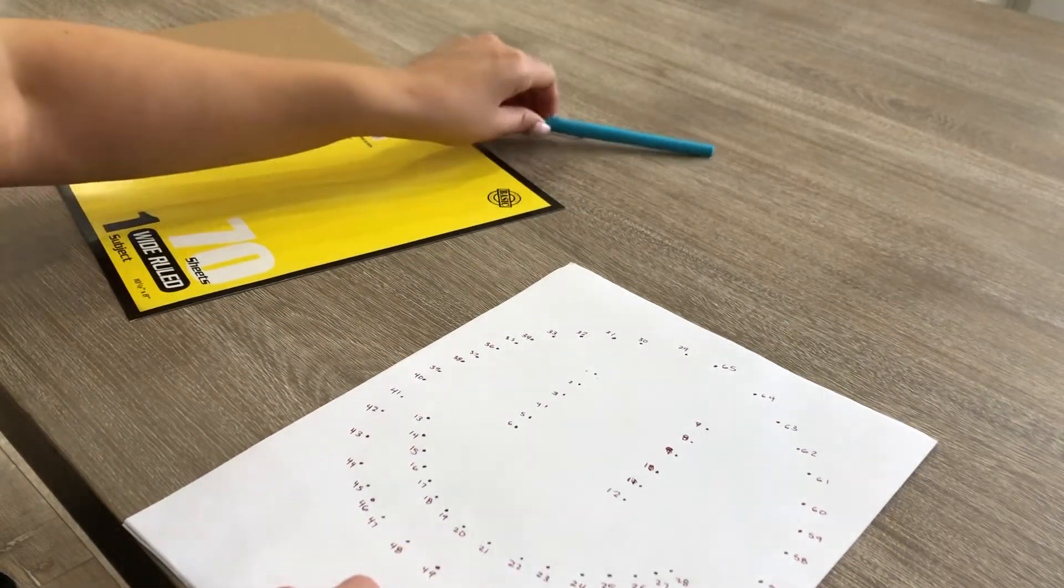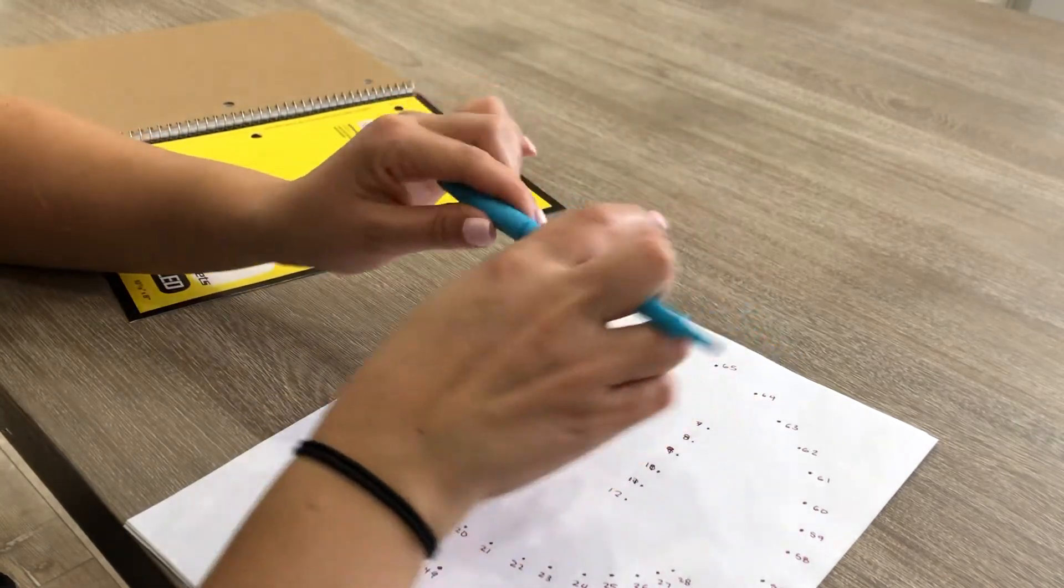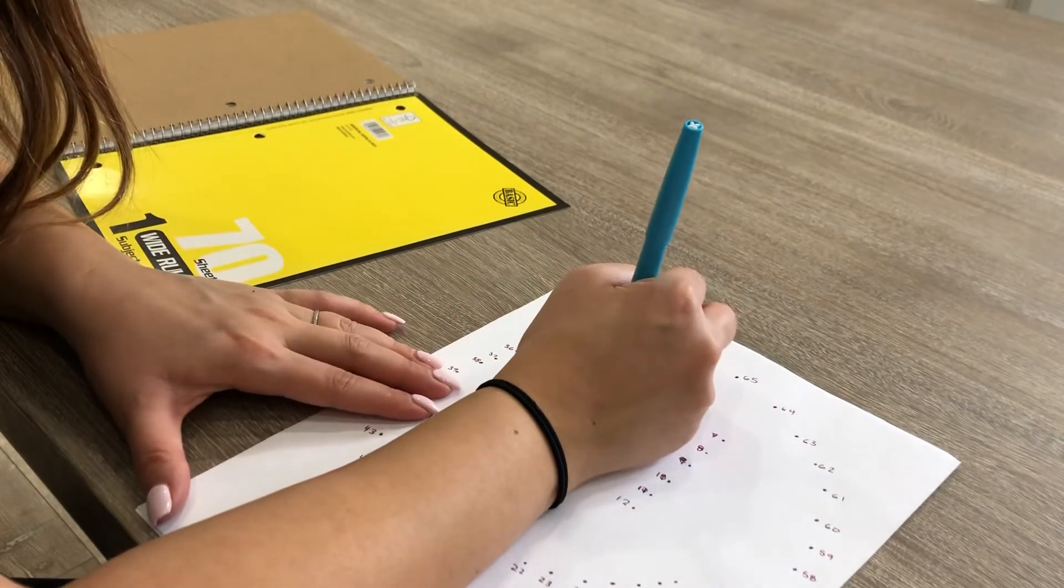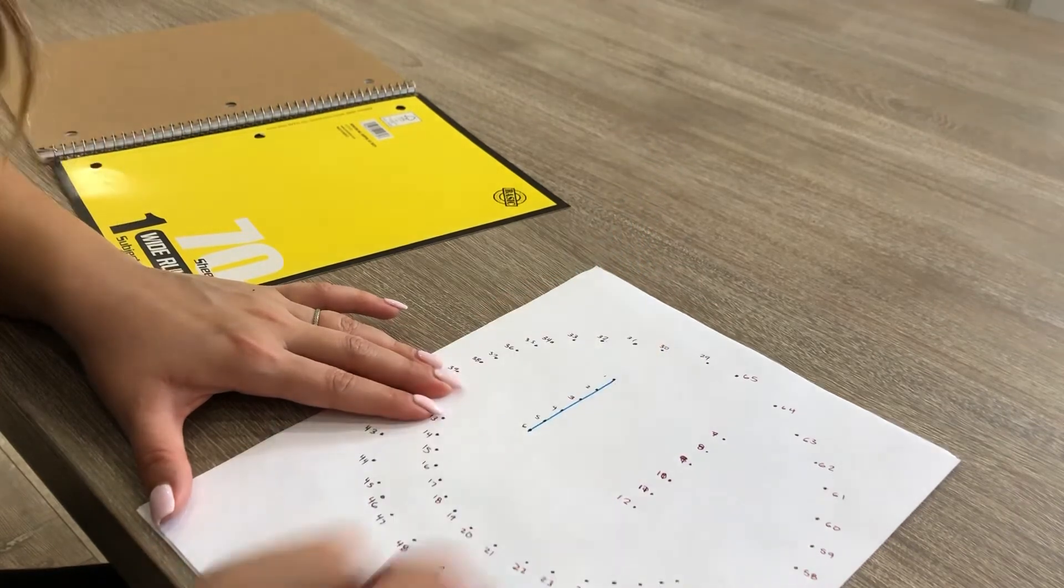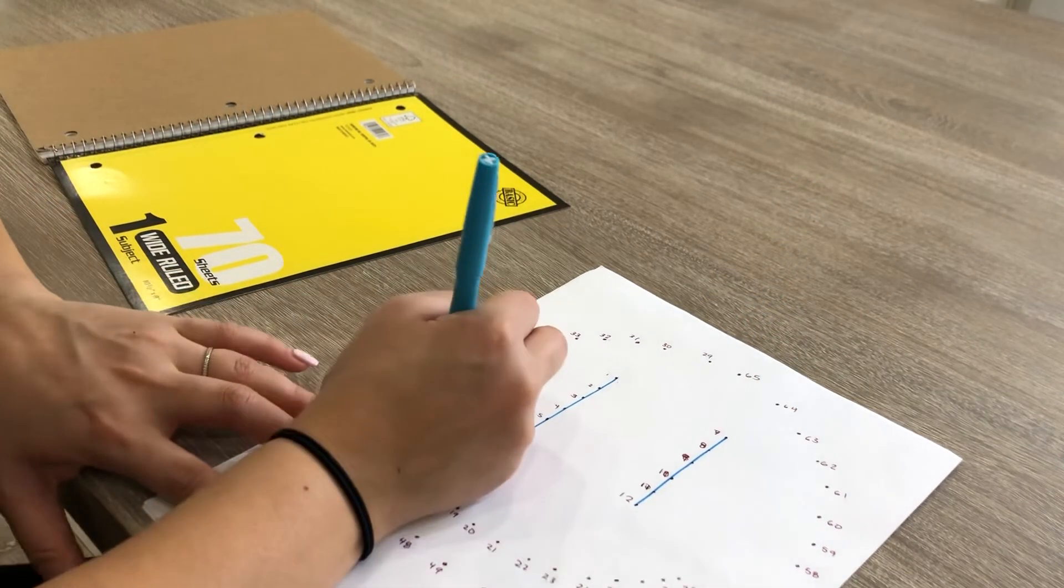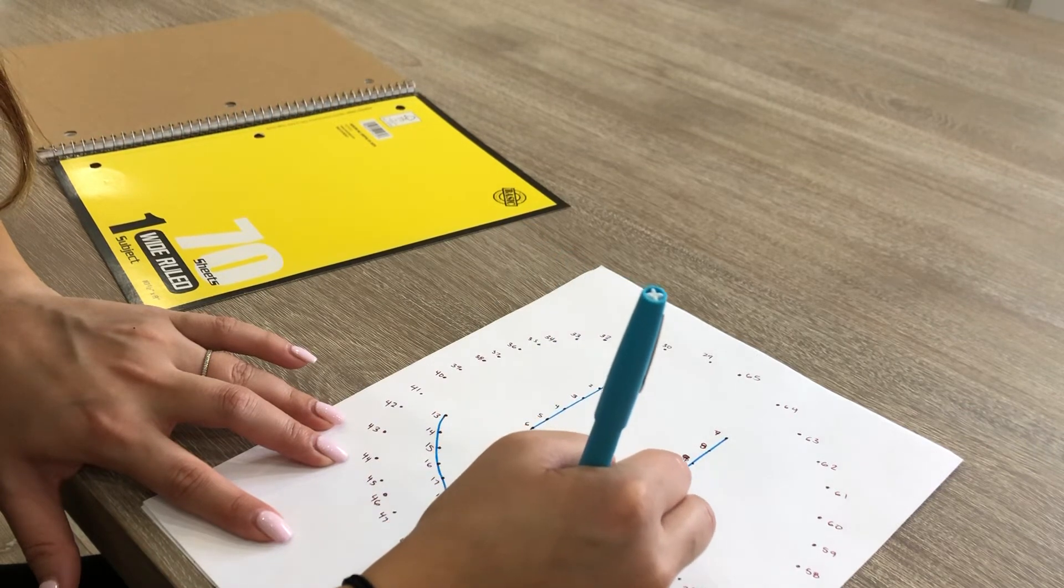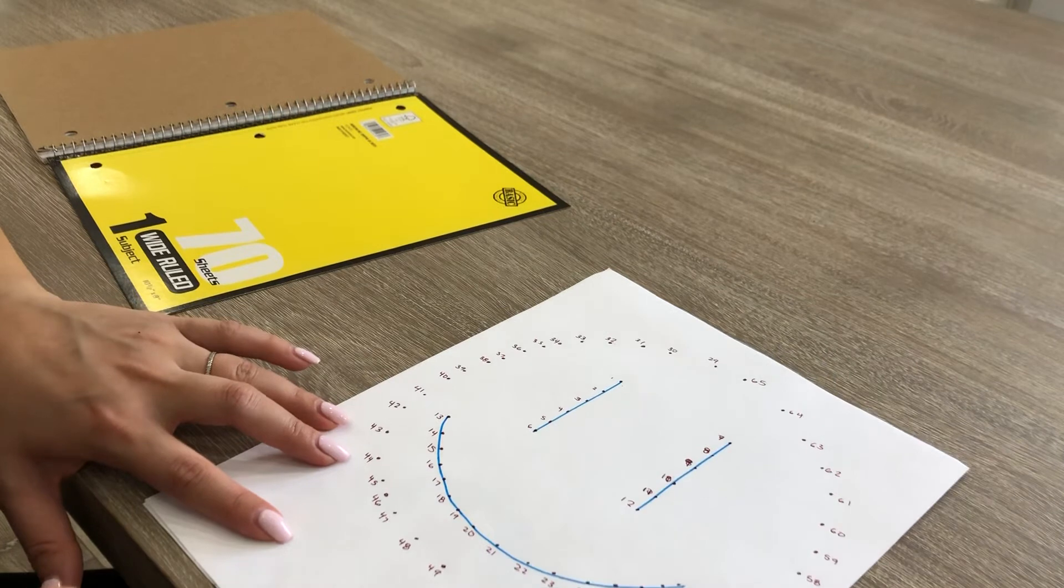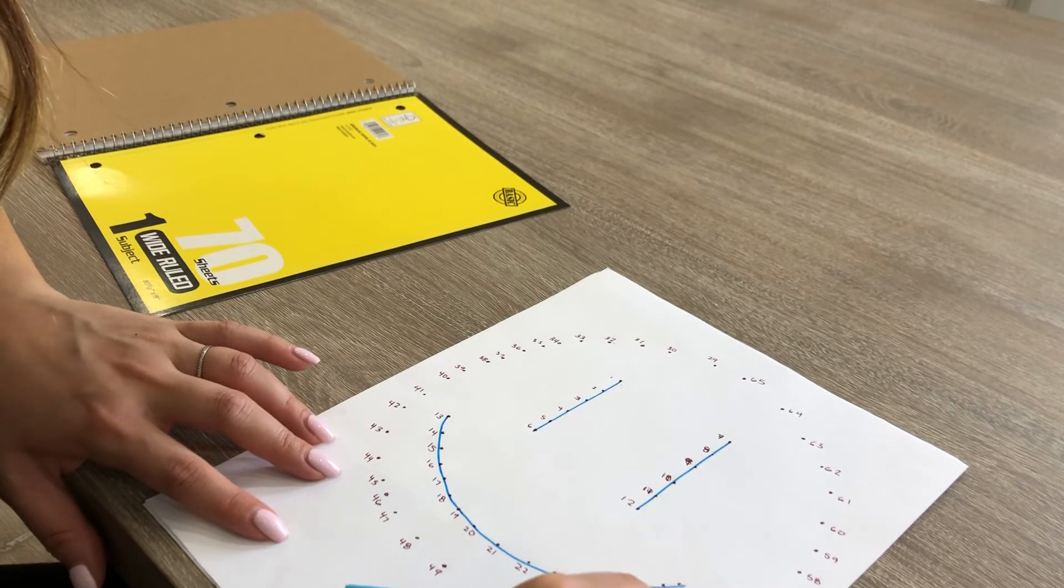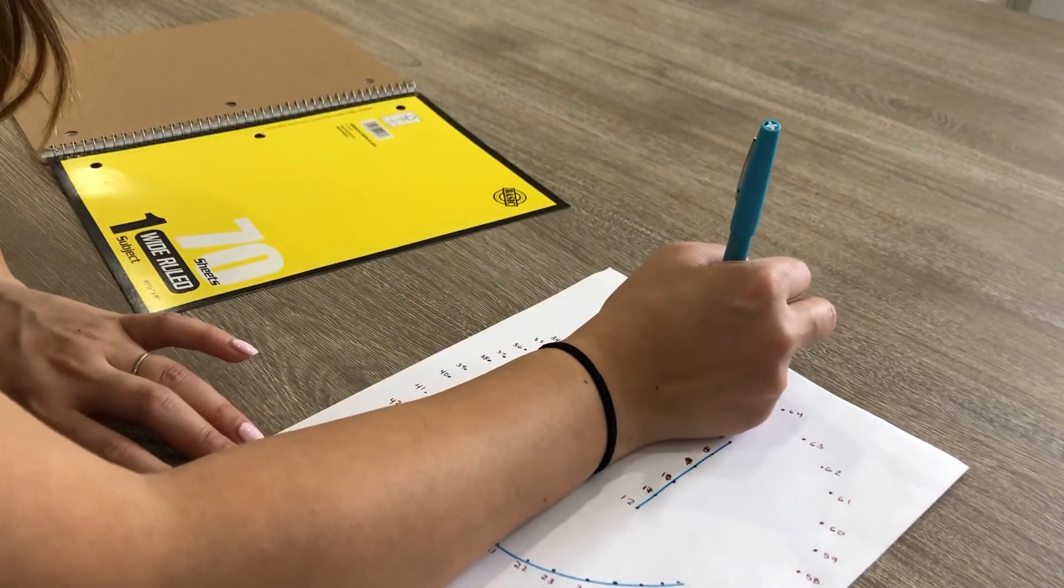So now what you would like to do is grab a pencil, a different colored pencil or a marker or a crayon and start connecting the dots. So I'm going to start with one and then go up. So I ended at 28. Now, what number am I supposed to find after 28? 28, I am supposed to find 29. So we have 29 over here and I'm going to continue.